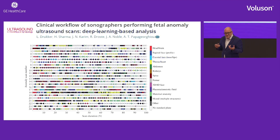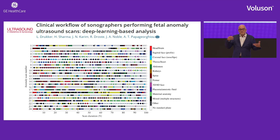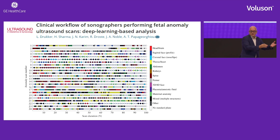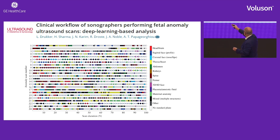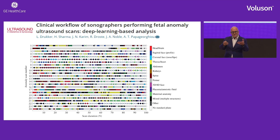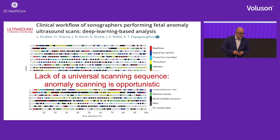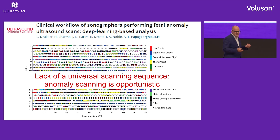What's very different in obstetric ultrasound screening compared to screening an adult is that the sequence in which you do things is completely random. We looked at the sequence in which ultrasound images are taken: in some scans you start with the head and brain, in others with the thorax, abdomen, or heart. Even if you have a system in your head, we all depend on the fetal position. The lack of a universal screening sequence means our anomaly screening is opportunistic — and these are the challenges we face every day.